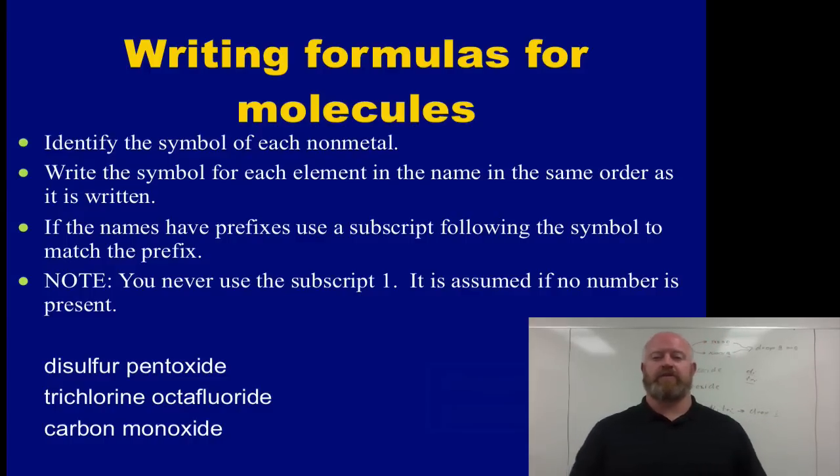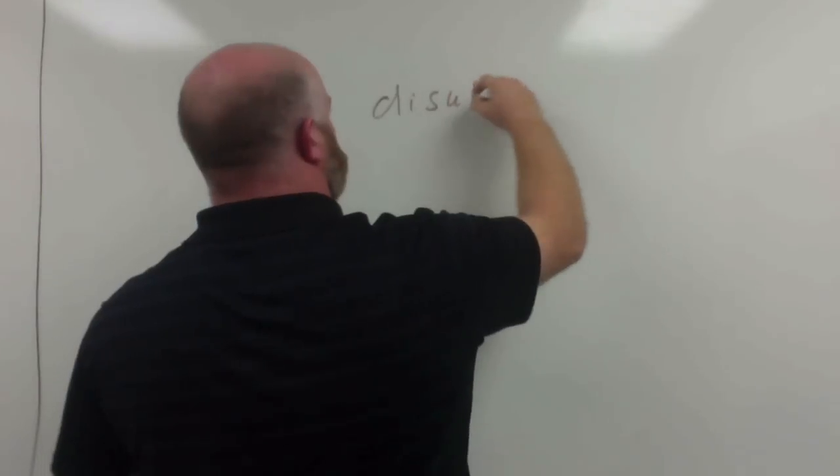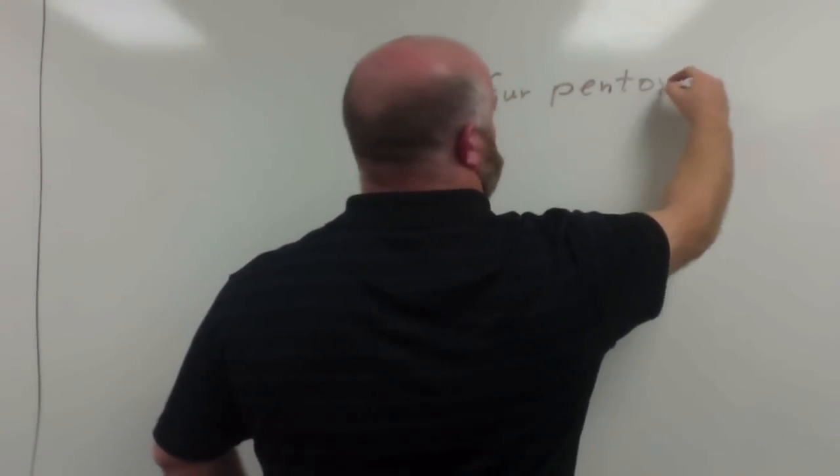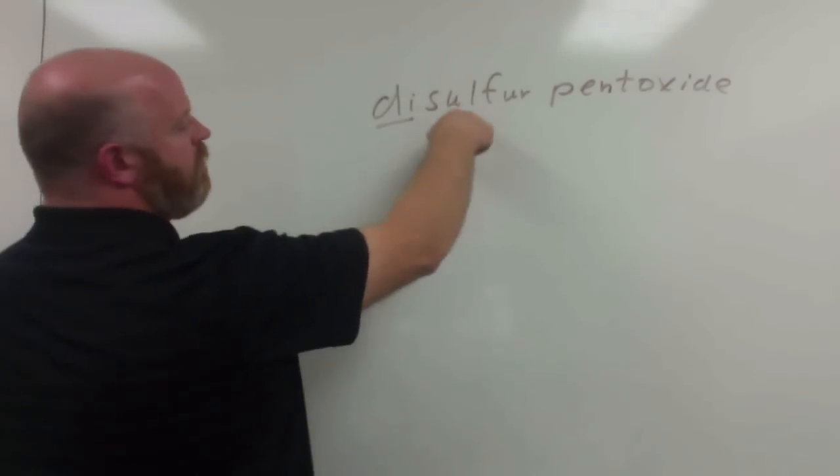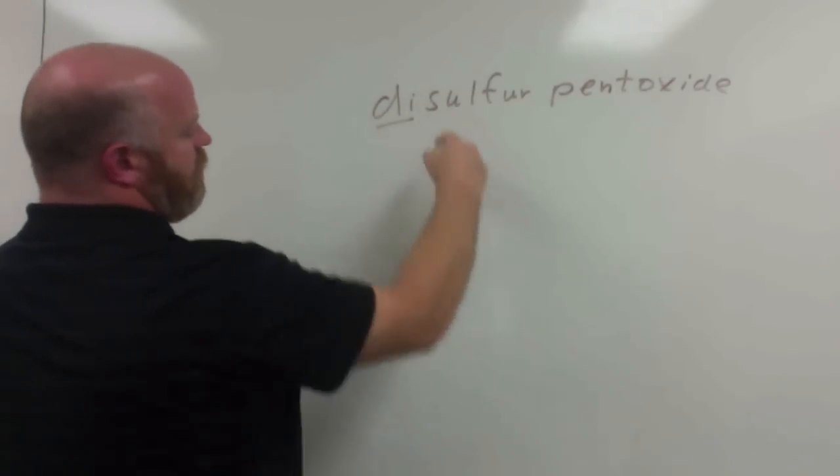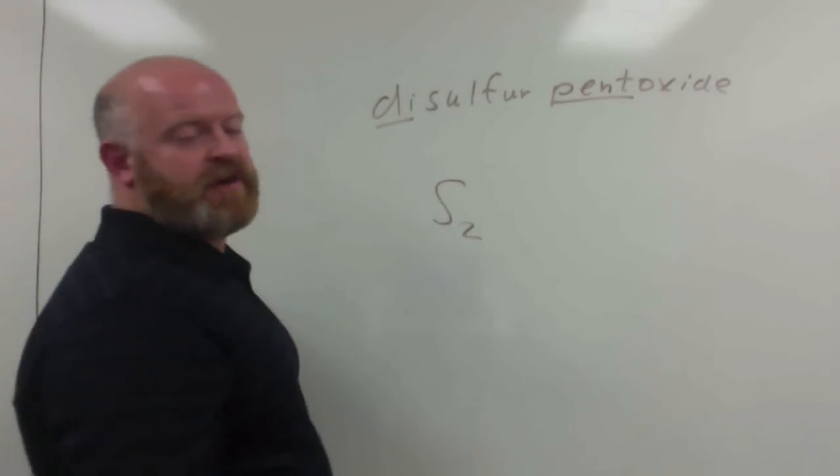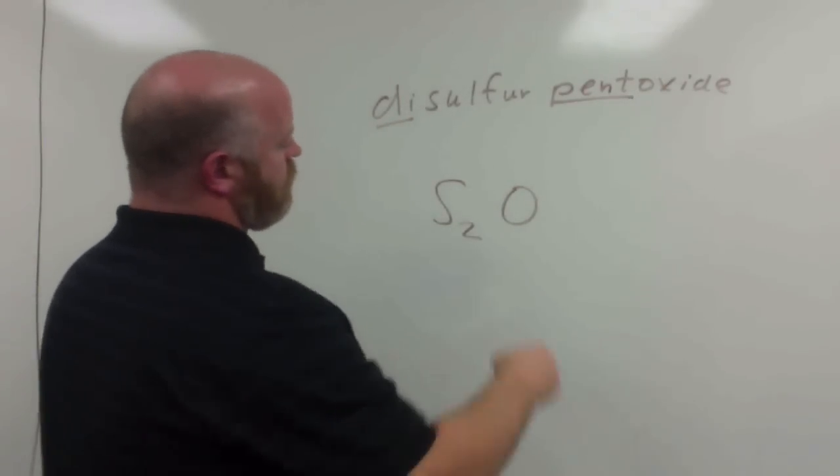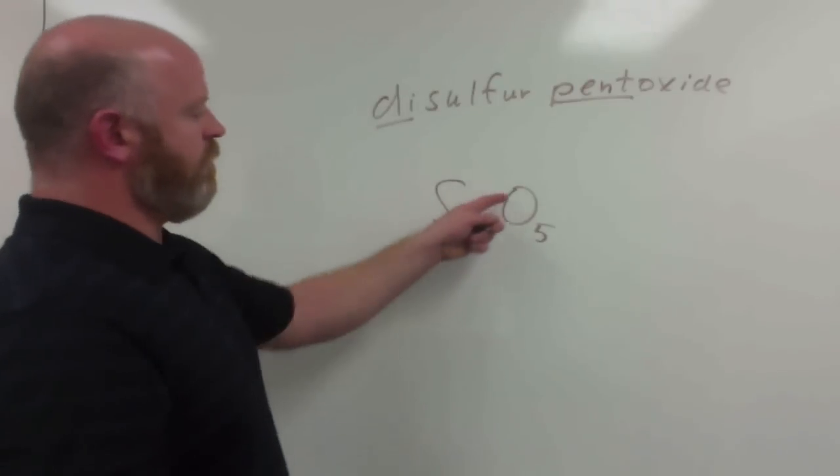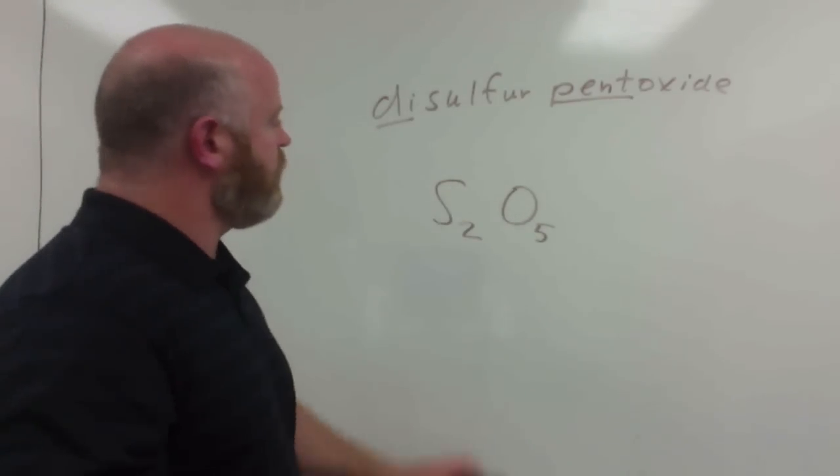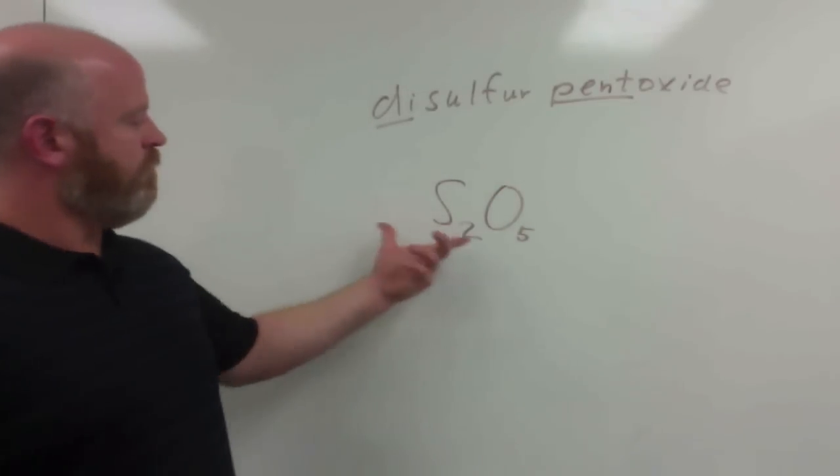The second part of this is writing the formulas when you're given the names. So it's the same process, we just run it in reverse. Again, we identify the symbol, write the symbol in the same order as the name was written. Whatever prefixes are there, you write those down as subscripts. One thing to note, you never use a subscript one, it's assumed that there's no number present. So for disulfur pentoxide, the di here tells us we have two. Sulfur's symbol is a capital S, so disulfur would be S2. The pent tells us we have five. The symbol for oxygen is a capital O. So we have S2 and pent tells us five, so we have S2O5 would be a formula. There is no space between these, I don't want you to think that there is. So written all as one grouping, S2O5.